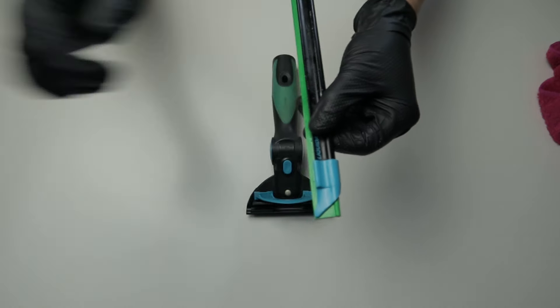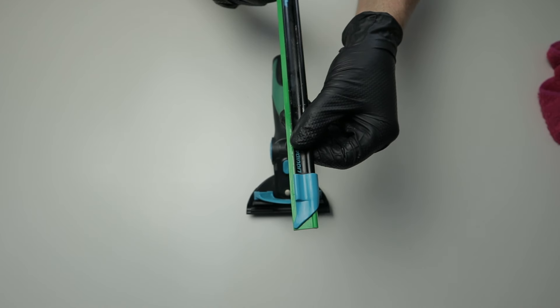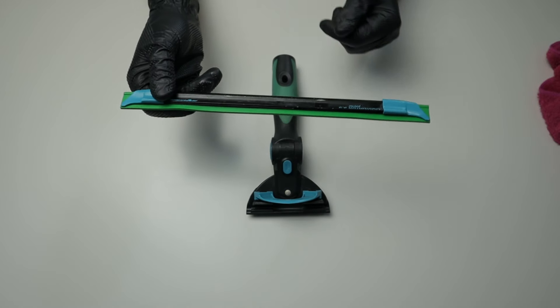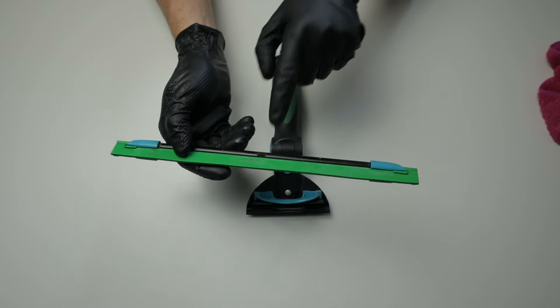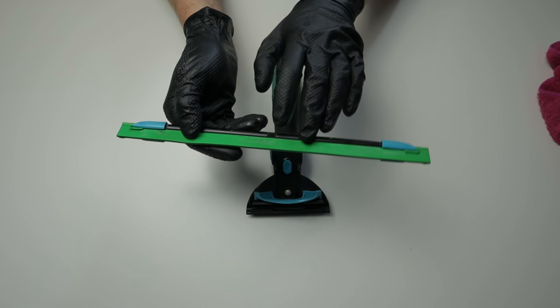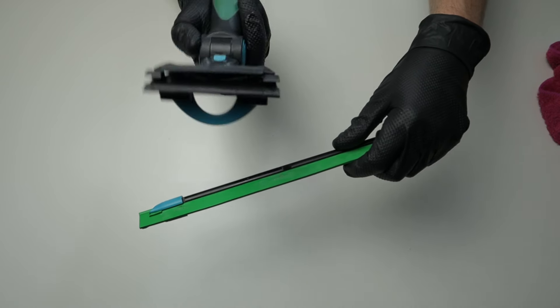You can see there that the channel is nicely set up. Our rubber is flush at the ends, and that is ready to go. Same again with the previous squeegee, the side with the most rubber showing is the underside. This is the side that the teeth of your clamp, your handle, are going to grab into.